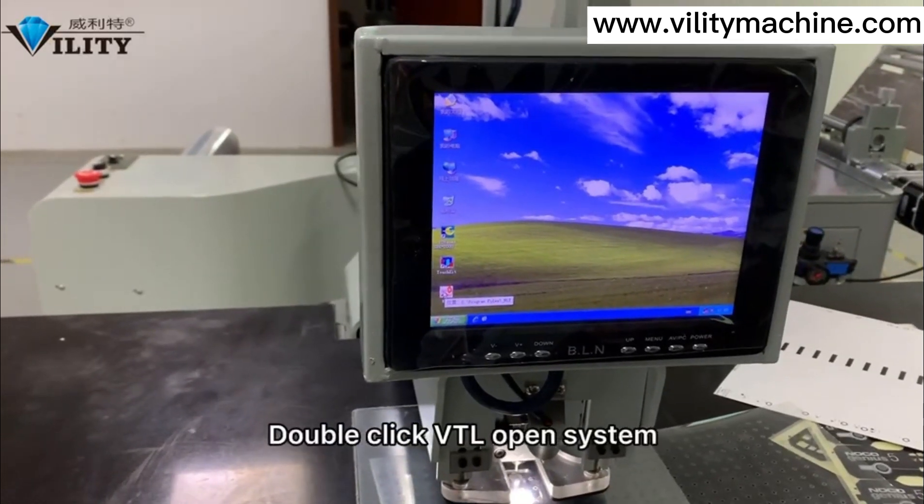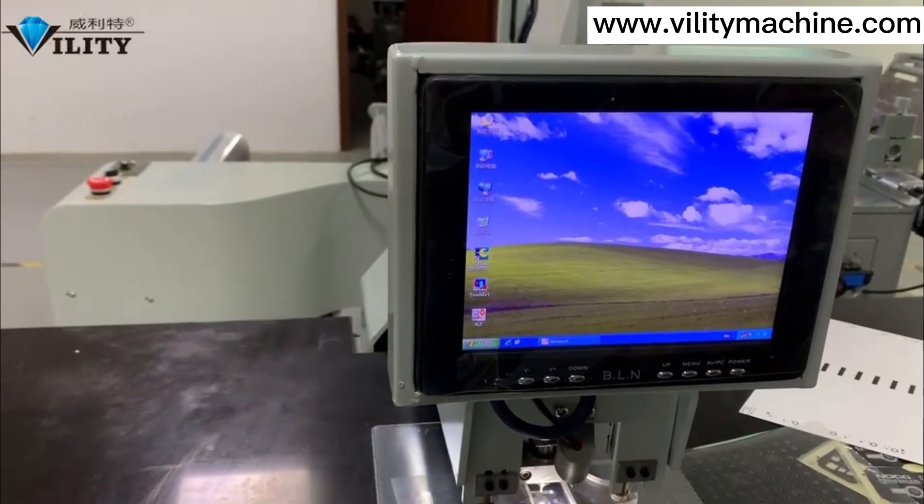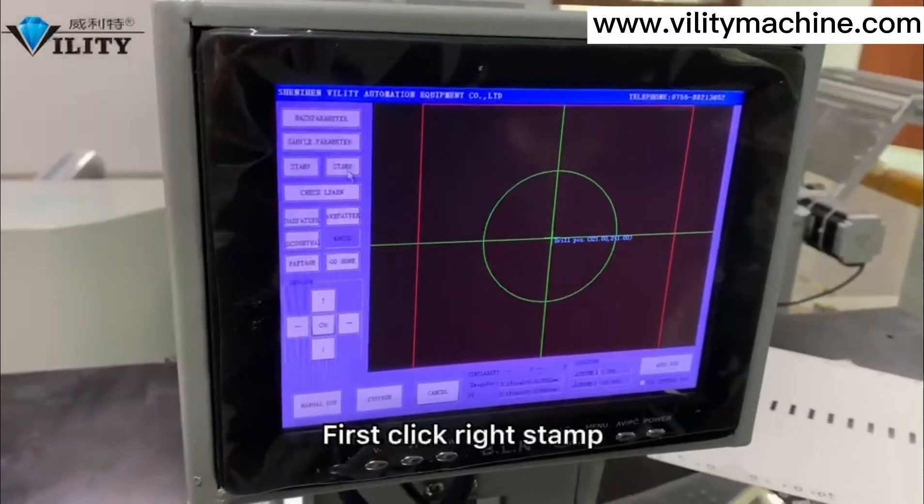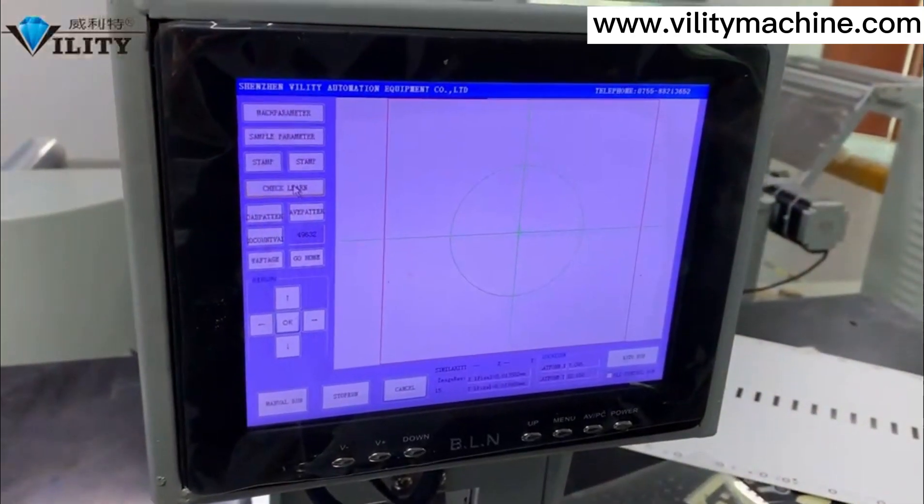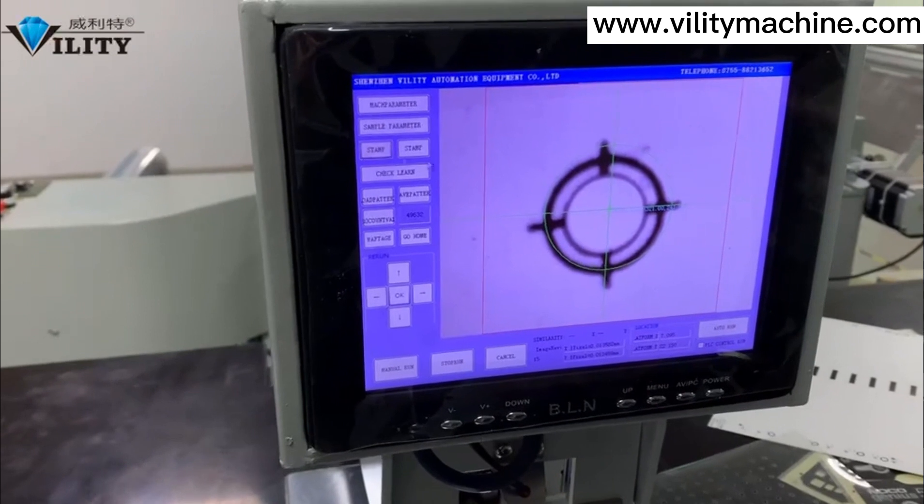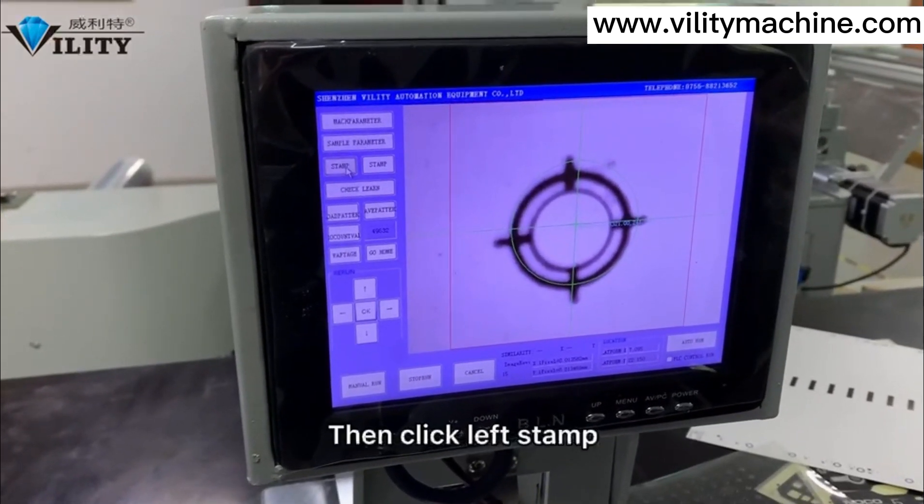Double click VTL to open the system. First click right stem. Only when you click the stem will the right line come up. Then click left stem.